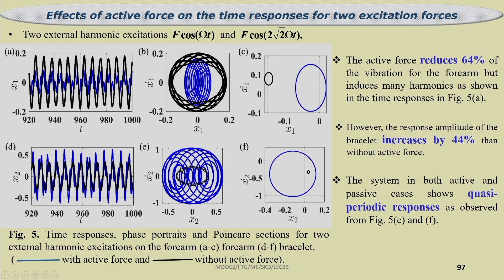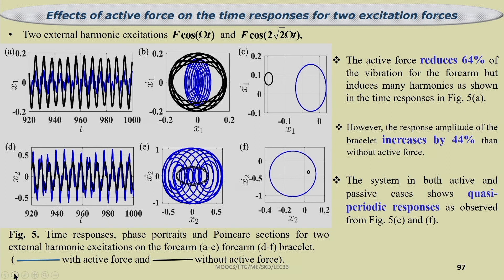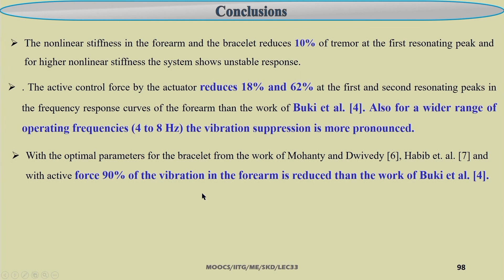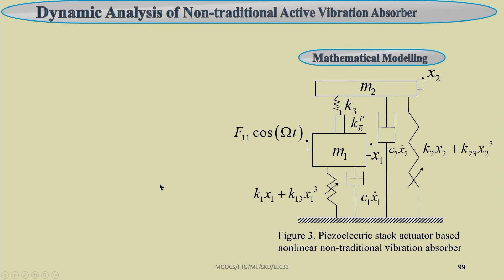This is the Poincaré section — in case of quasi-periodic response, if you plot the Poincaré section you clearly observe a closed loop. Both with and without active force cases are shown. This way, using a torsional vibration absorber, we can effectively control the forearm vibration significantly.